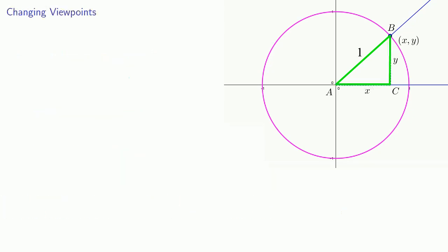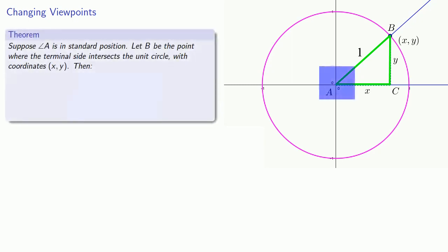So now let's change our viewpoint slightly. Suppose angle A is in standard position. Let B be the point where the terminal side intersects the unit circle with coordinates x, y. Then the sine of A is equal to y, the cosine of A is equal to x, and the tangent of A is equal to y over x. And what's useful to keep in mind here is while this was determined by assuming that this angle A was an acute angle, we can still find these values x, y, and y over x whatever the measure of the angle A is.